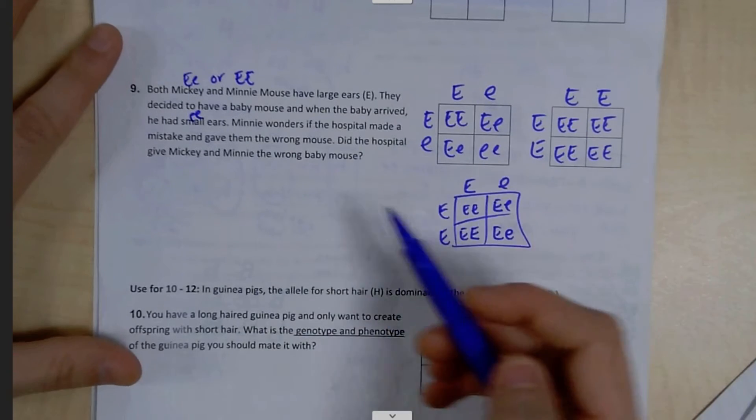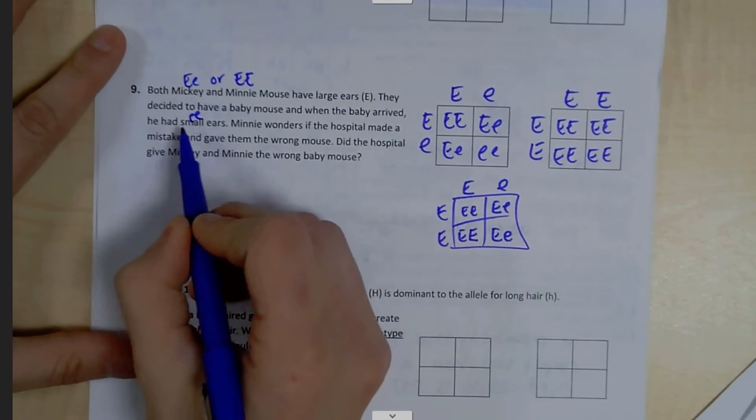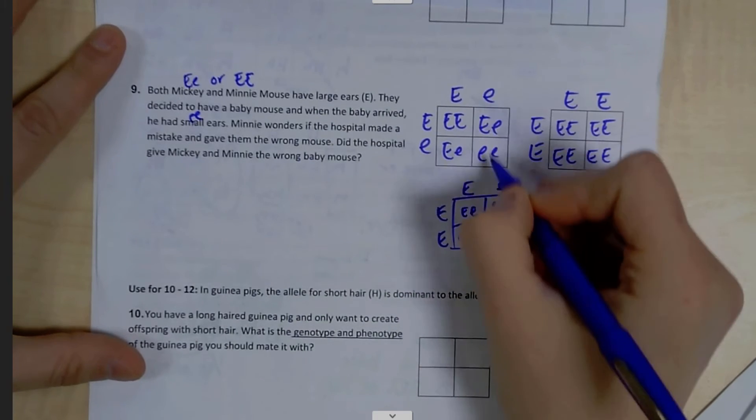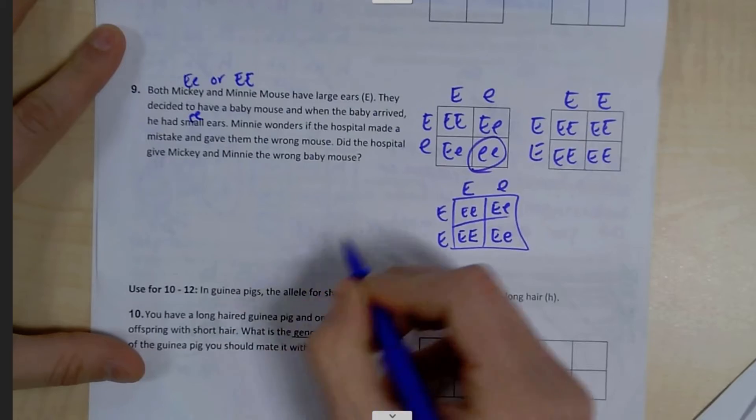So after we complete the crosses, we're trying to see if any of them, if it's possible their baby had little e. In this case, we have a 25% possibility.